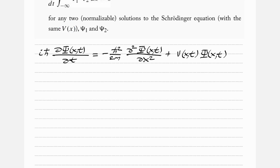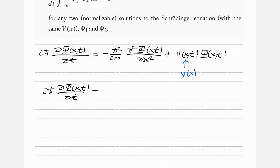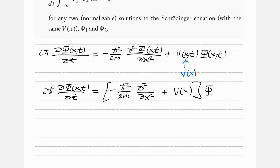For the sake of simplicity, we factor out psi from the right-hand side terms, giving us: i h-bar d psi(x,t)/dt equals the bracket minus h-bar squared over 2m times d squared/dx squared plus V(x), close bracket, all acting on psi(x,t).